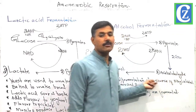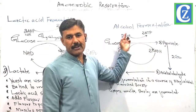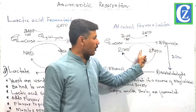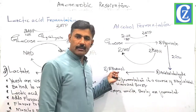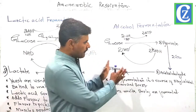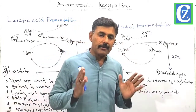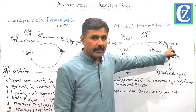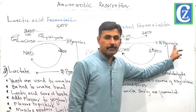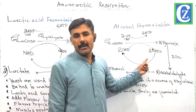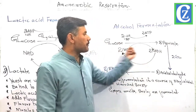In the second step, reduction takes place. This acetaldehyde is reduced. The molecules of NADH synthesized during glycolysis are used — the oxidation of NADH reduces acetaldehyde into two molecules of ethanol. Therefore, in this process also, we are not producing ATP. The conversion of pyruvate into ethanol produces no ATP, but it consumes NADH that was otherwise produced by glycolysis.